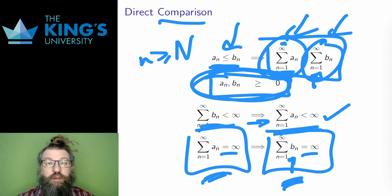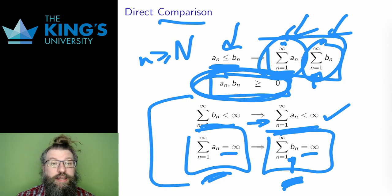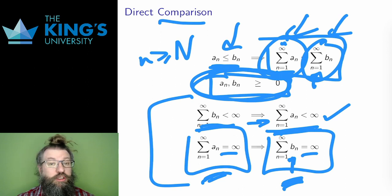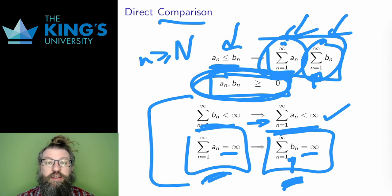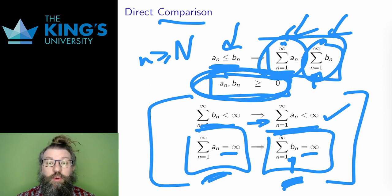Only these two directions work; the other two comparisons don't help. If a series is smaller than something divergent, well then I don't know anything — I don't know how much smaller it is. Is it small enough to converge or not? Who knows? Likewise, if it is larger than a convergent series, I still know nothing — how much larger? Is it larger enough to diverge? This is the frustration of comparison. Often the easy-to-make comparisons are these unhelpful ones. Only smaller than convergent, or larger than divergent, are the ones that actually prove something.